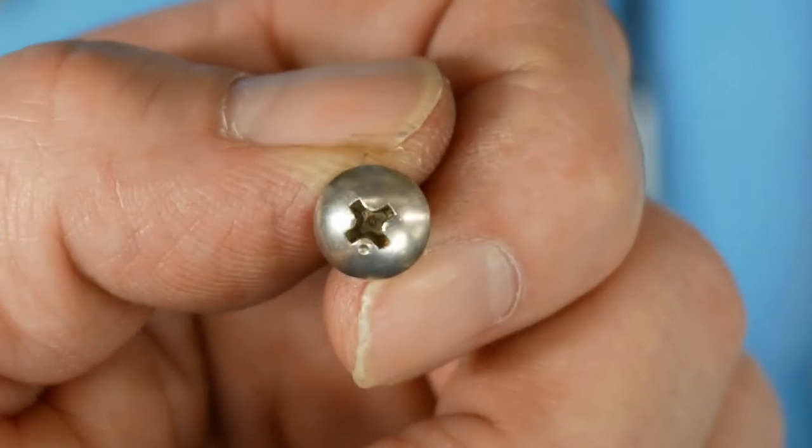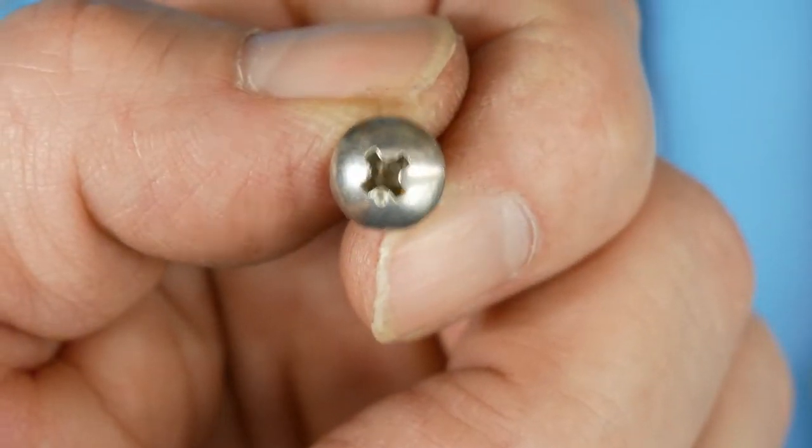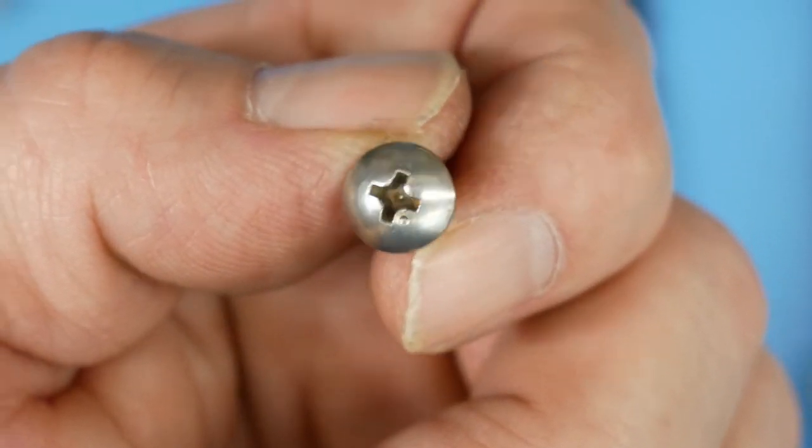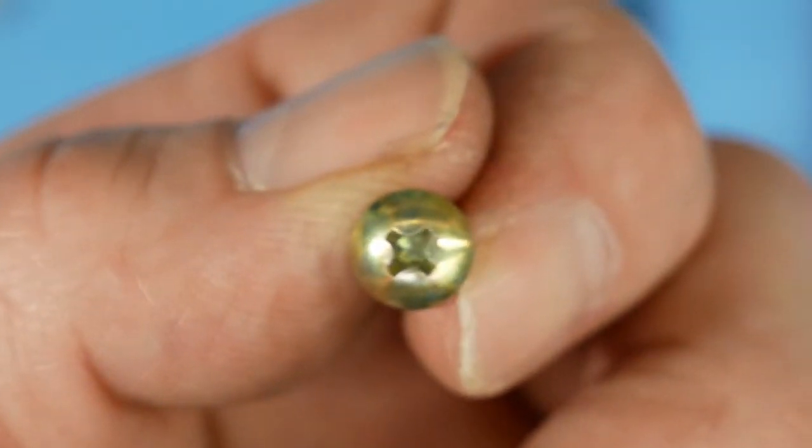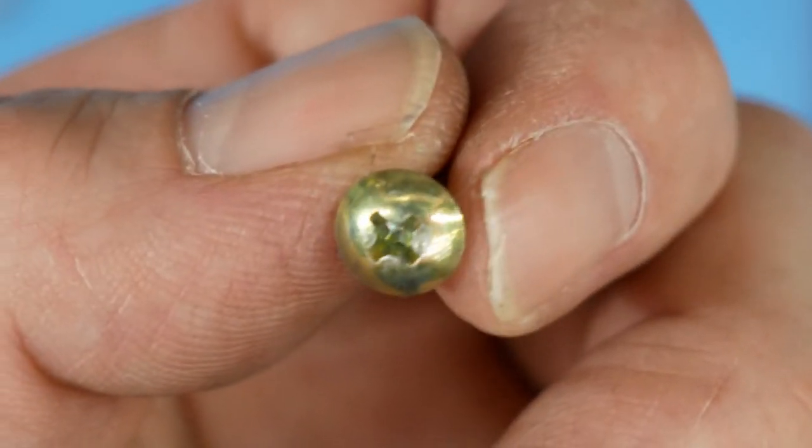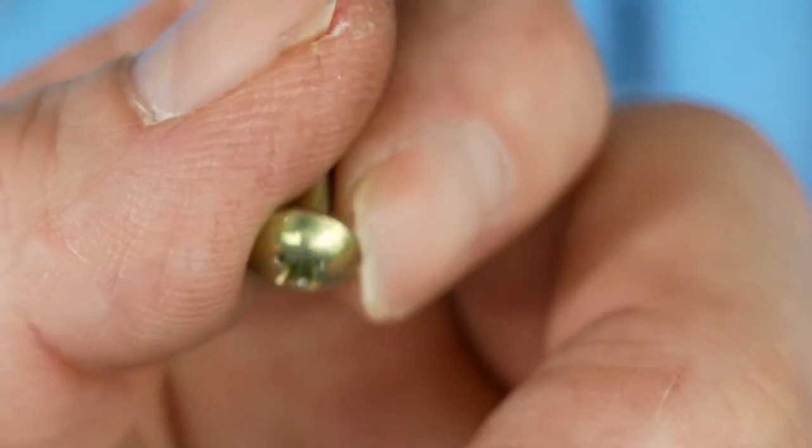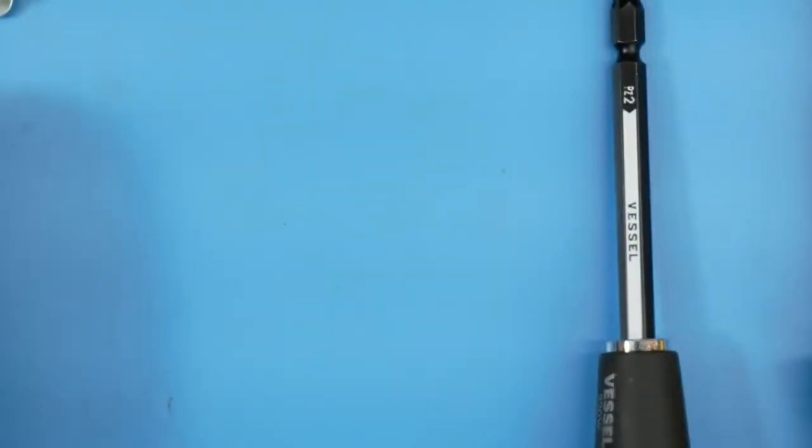There's another one. I don't know if you can see the little dimple in there. And here's another one that does not have the dimple. So not all the JIS screws have dimples.